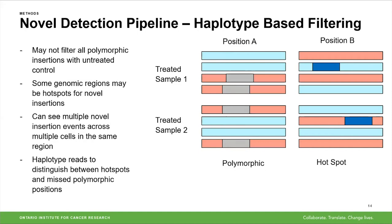We might not always filter out all polymorphic inserts with the untreated control, and some genomic regions might be hotspots for novel inserts with multiple novel insertion events across multiple cells in the same region. To distinguish between polymorphic regions and hotspots, we use a haplotype-based filtering approach: we phase all reads and look for haplotype-specific insert patterns. A polymorphic insertion should appear in all reads for one or both haplotypes, while a hotspot will show insertions differing between haplotypes.